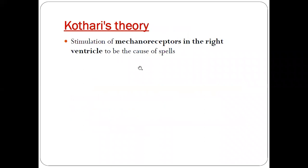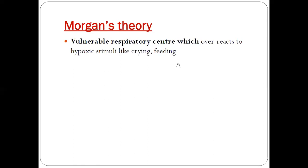Next is Kothari's theory, which states that stimulation of the mechanoreceptors in the right ventricle can unleash the cause of the spells. Stimulation of these mechanoreceptors in the right ventricle leads to cyanotic spells according to Kothari's theory.